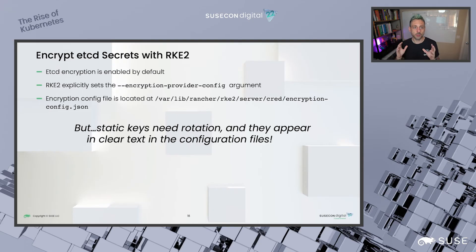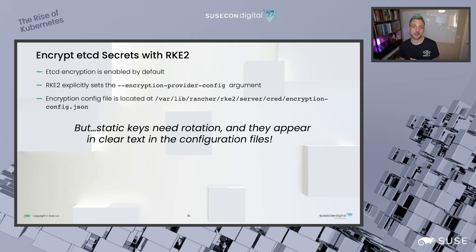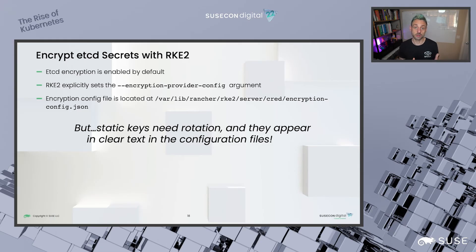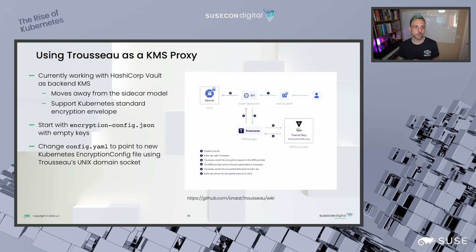In terms of encryption, etcd encryption is enabled by default in RKE2, where RKE2 sets the API server encryption provider config to a specific file containing the encryption configuration. However, it does use static keys, which has the issue we mentioned before — they are in clear text, and you need to manage key rotation yourself. So how can we solve that particular problem?